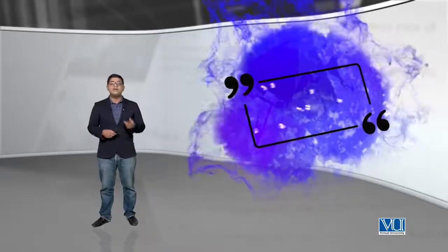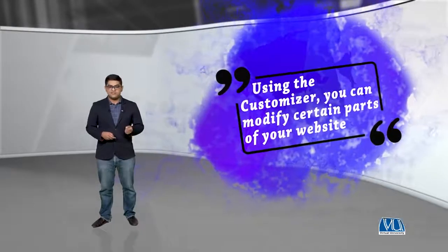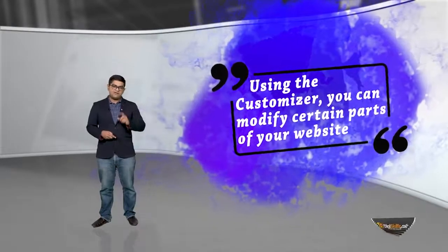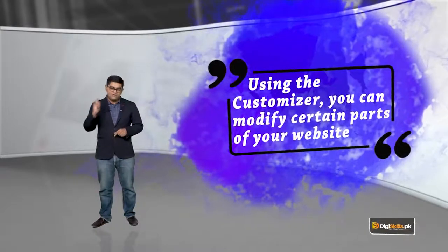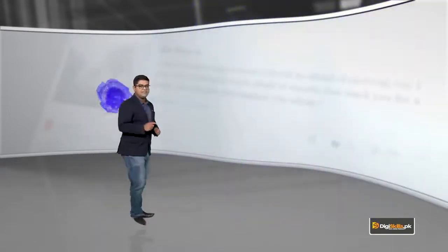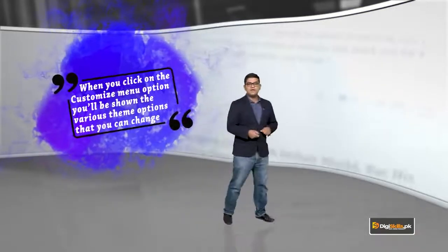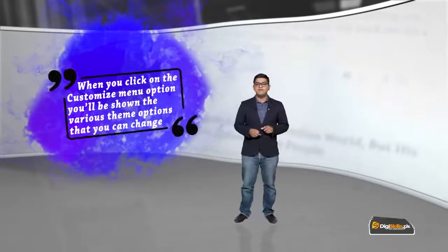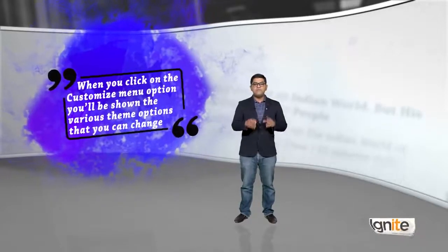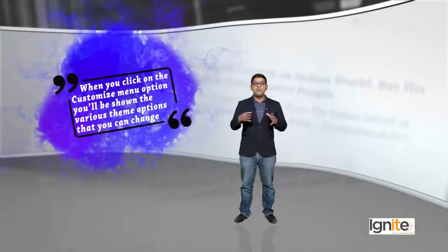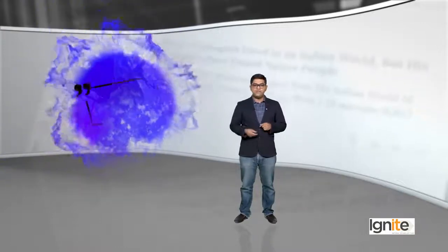Before we do that, let's talk about the customizer — what is the customizer feature. Using the customizer, you can modify certain parts of your website. It's a feature that is available natively on WordPress. When you click on the customizer, you can see a menu with various options, and if you change those options, you will be able to change the look and feel of your website.